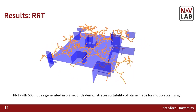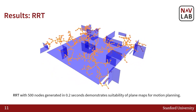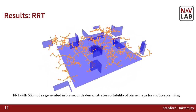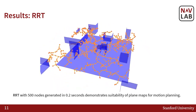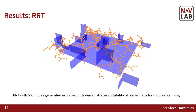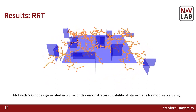Finally, we demonstrate the suitability of our plane-based map for motion planning by generating an RRT. Due to the speed of collision checking, we can generate an RRT with 500 nodes in just 0.2 seconds. Thank you.